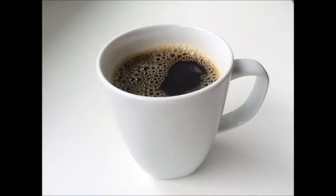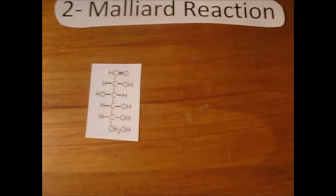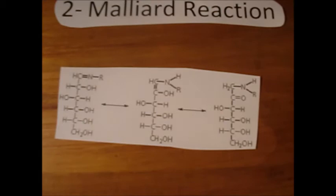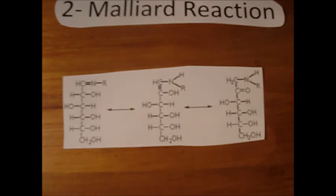Maillard reactions start off with a reducing sugar such as glucose reacting with an amino acid, which is shown here as R-NH2, to make the reaction slightly easier to follow. The first step results in the formation of an N-glycosylamine, which will isomerize into all three of these compounds.